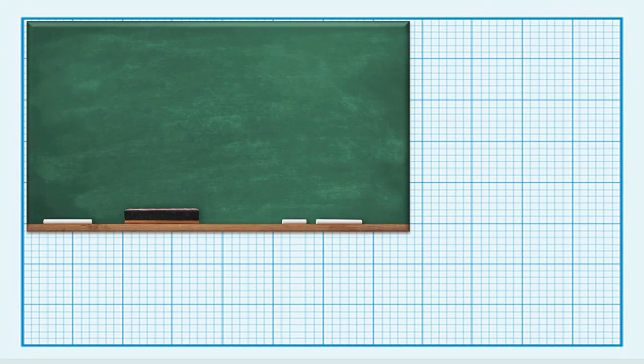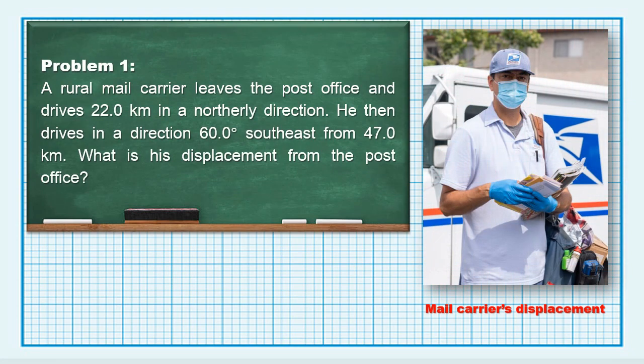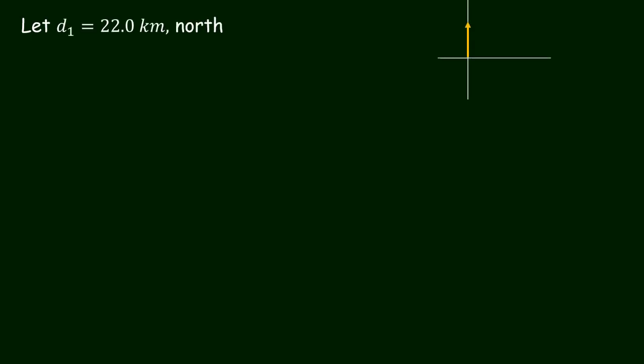Let's apply all what we have learned to answer the following problems. First problem: a rural mail carrier leaves the post office and drives 22 kilometers in a northerly direction. He then drives in a direction 60 degrees southeast for 47 kilometers. To solve the problem, here is our solution. We let D sub 1 equals 22.0 kilometers north and D sub 2 equals 47.0 kilometers 60 degrees southeast.